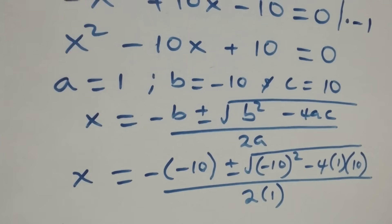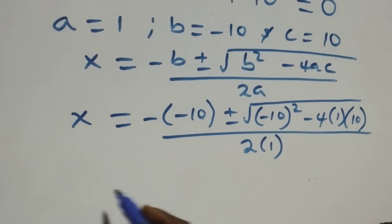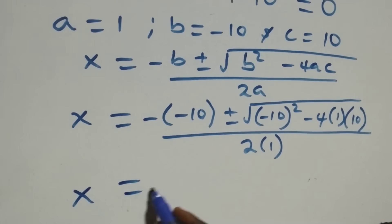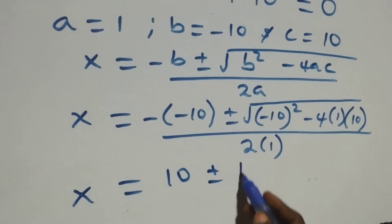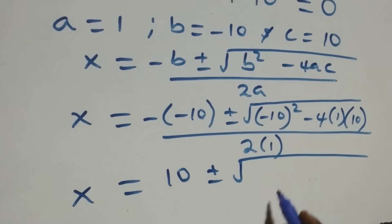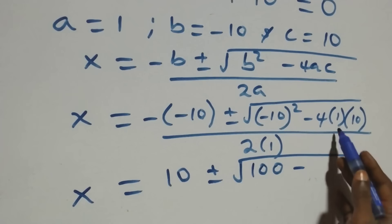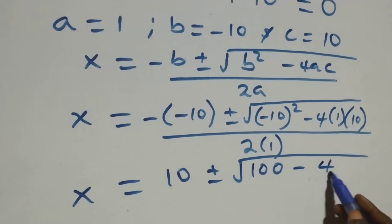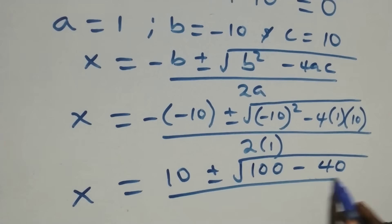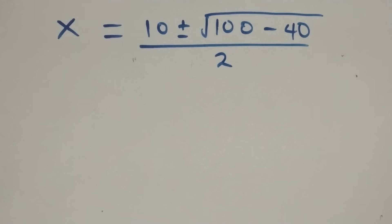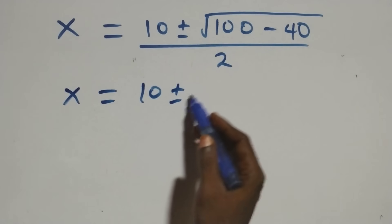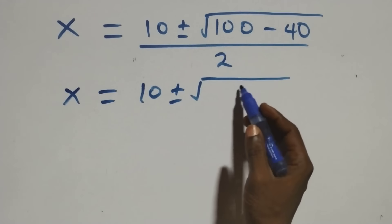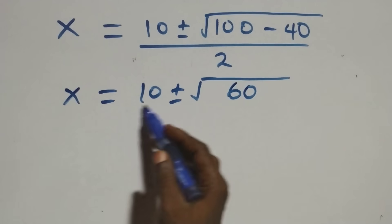This becomes x equals to 10 plus or minus square root of (minus 10) squared — that's 100 — then minus 4 times 1 times 10, that's 40, all over 2. So x equals to 10 plus or minus square root of 100 minus 40, which gives 60, all over 2.